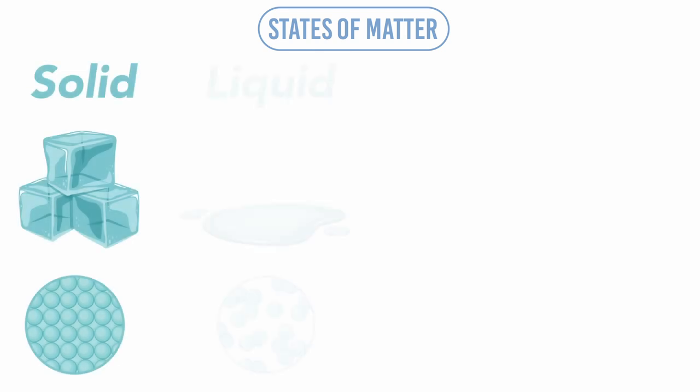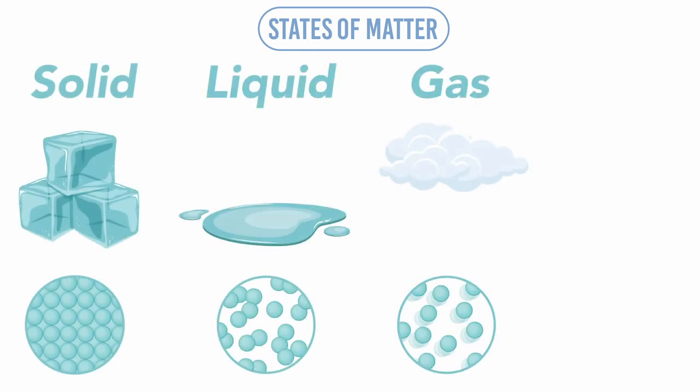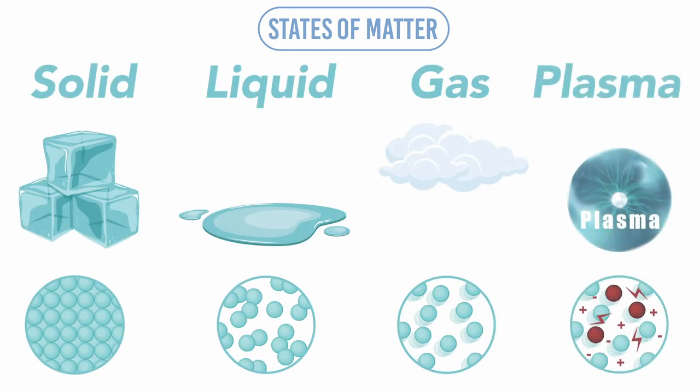But what does it mean when we say a material is viscoelastic? In order to understand this, we have to go back to basic chemistry. In the universe, matter can exist in any one of four fundamental states: solid, liquid, gas, or plasma, which is an ionized gas.